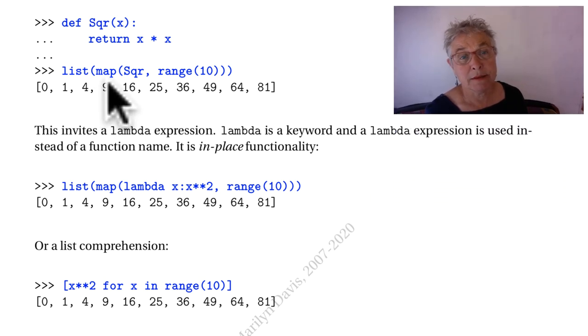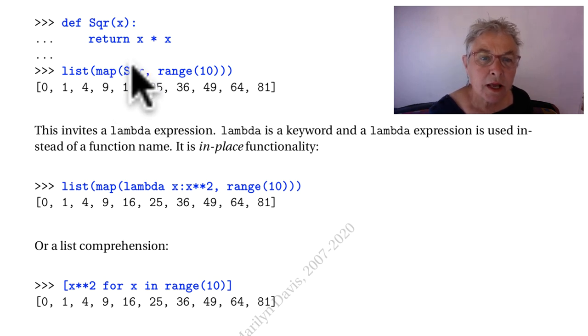Map is a built-in functional programming function. You give it the identifier for any other function and it has to be a function that can take in any of the elements that you give it in this sequence. Then each of the elements will go through that function and what is returned will appear in the resulting list.